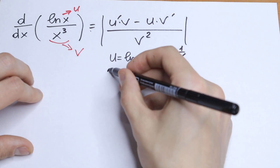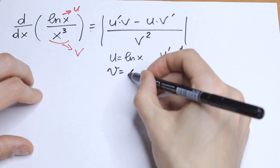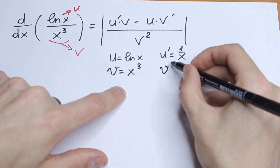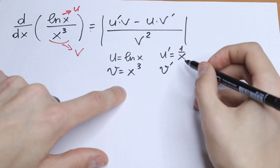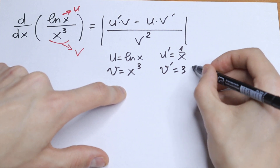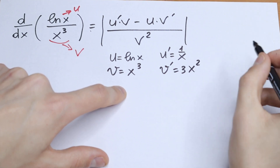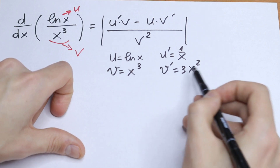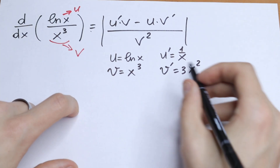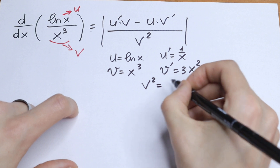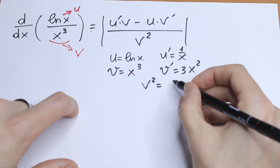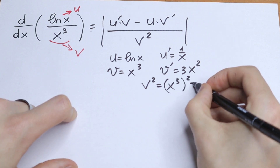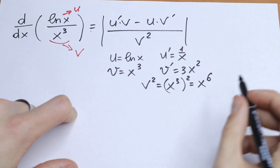Our v will be the denominator x cubed, and v' — using the power rule — will be 3x squared, since the 3 comes down and we subtract 1 from the exponent. And v squared will be x cubed to the second power, which equals x to the sixth power.